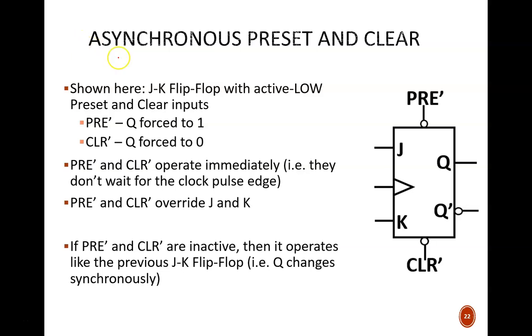Shown here is the device symbol for a JK flip-flop with asynchronous inputs named PRE and CLR. Imagine for a second that those inputs were not there, then this device would look exactly like the basic JK flip-flop discussed last video. Other types of flip-flops like D and T can also have these inputs, but we'll just look at the JK example here.